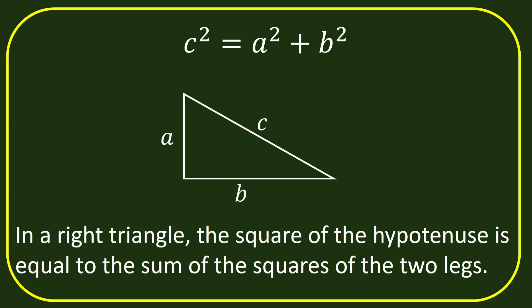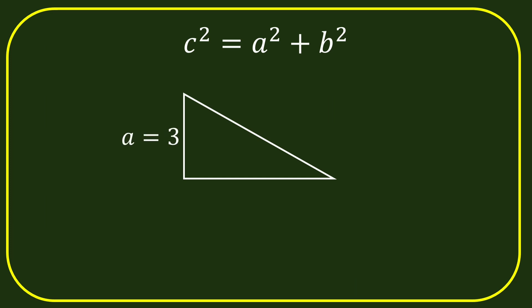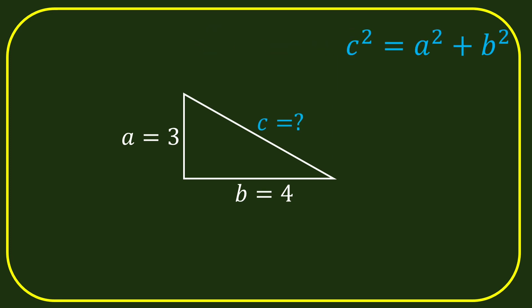This formula can be used to solve the unknown side of the right triangle. For example, if the first leg is 3, the second leg is 4, what is the length of the hypotenuse? In the figure, a is 3, b is 4, and we are going to find c.